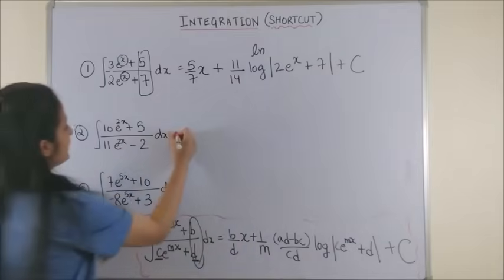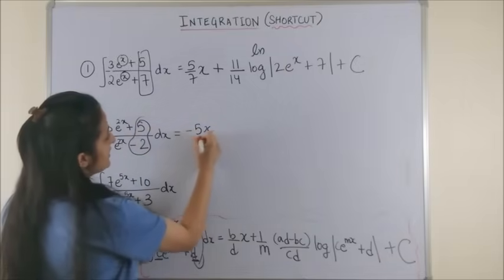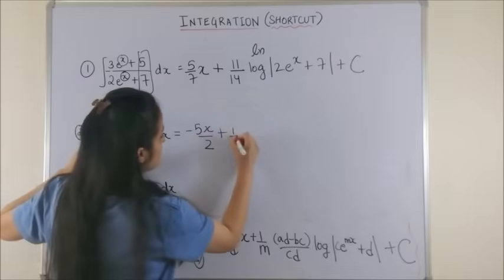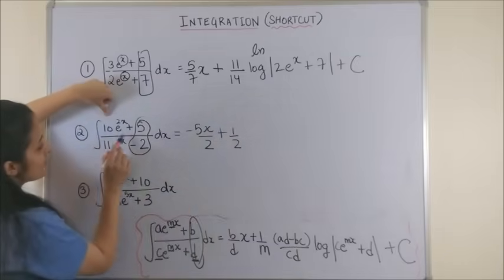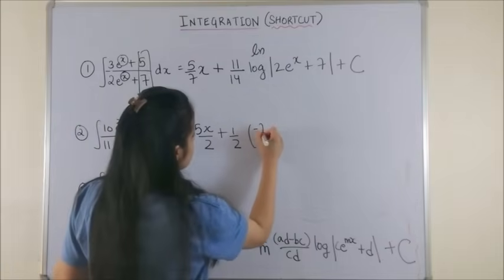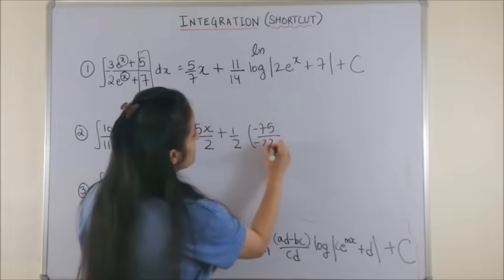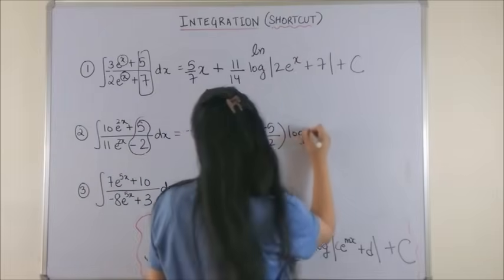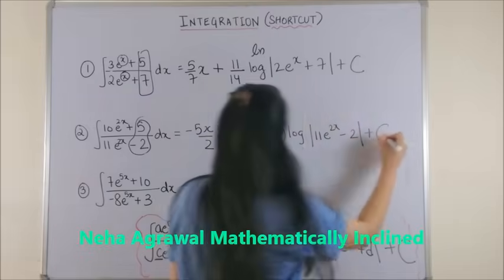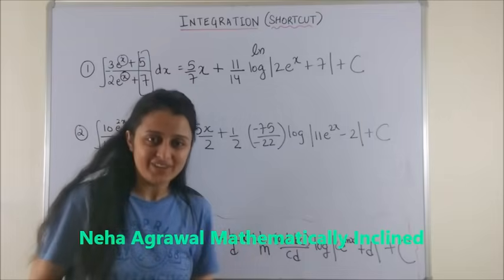Likewise for the second one I take this but with the sign. So this is minus 5x by 2 and then you see 2x here so plus 1 by 2. Next we multiply so this is minus 20 minus 55 that makes it minus 75 upon the products of the denominator which is minus 22 log mod 11 into e to the power 2x minus 2 plus c. You can obviously simplify this before you write your final answer.